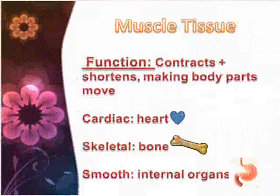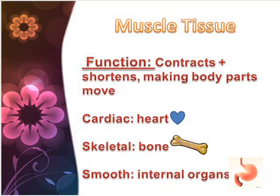Next, the muscle tissue. Its function is that it contracts and shortens, making body parts move. The types include cardiac, which involves organs such as the heart, the skeletal bones, and the smooth internal organs.